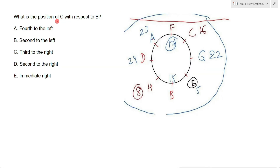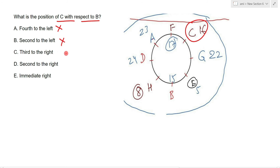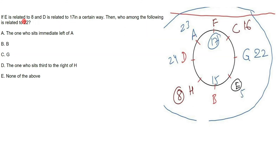Question 3: What is the position of C with respect to B? C is in B's third right, second right, or fourth to the left? Fourth to the left is wrong, second to the left is wrong. Third to the right is correct. So the answer is option number C.